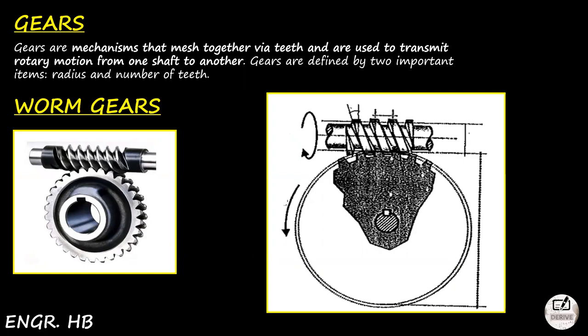So if there's motion involved, of course there's power and torque. Gears are defined by two important items: the radius and the number of teeth. That was already discussed in the first video — the diameters of the mechanisms involved and their number of teeth.